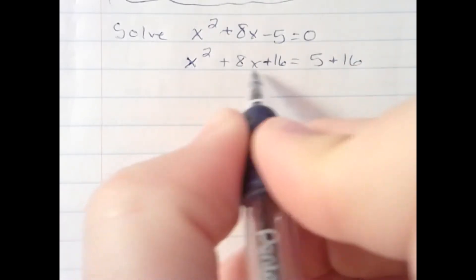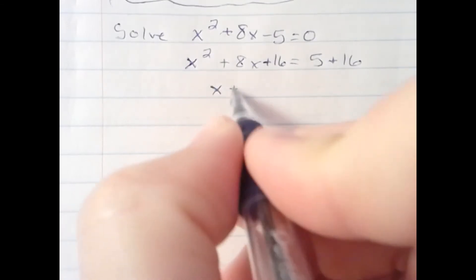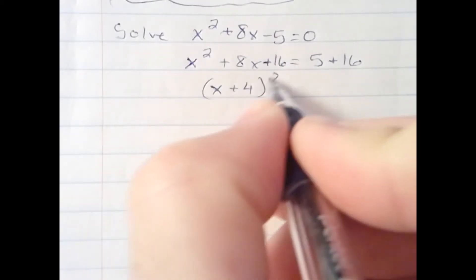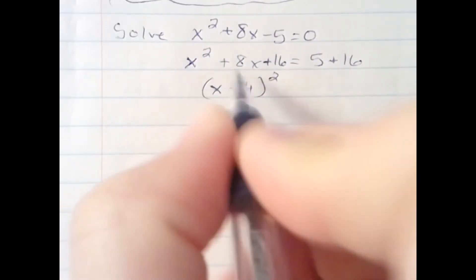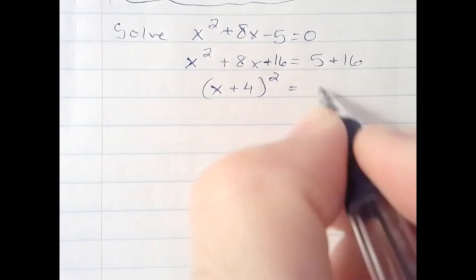Because this is a perfect square trinomial, I can now factor it like this: x plus 4 quantity squared, because if I foiled this out, I would get x squared plus 8x plus 16. On the right, I have 21.